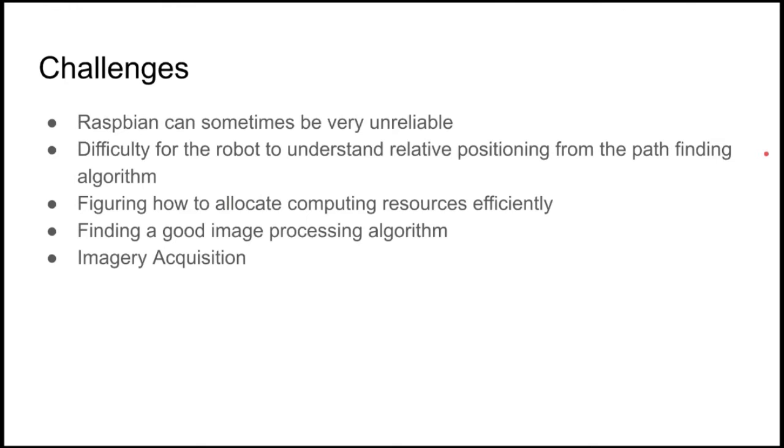Additionally, finding a good image processing algorithm was another challenging task. We looked at different techniques within OpenCV as well, things that we'll actually explore later on in this presentation. Additionally, imagery acquisition was an extremely big problem as well due to the fact that the Raspberry Pi can only process images up to a certain point. So the amount of images being taken in by the Raspberry Pi was diminished and this reduced the efficiency and the efficacy of the robot being able to respond to its environment.